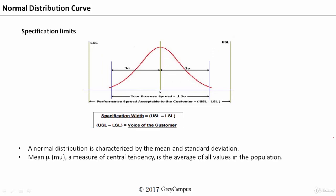The normal distribution is characterized by mean and standard deviation. Whenever we have a population and know what the mean and standard deviation are, we will be able to immediately tell about the process. This plus or minus three sigma will accommodate 100% of the values.